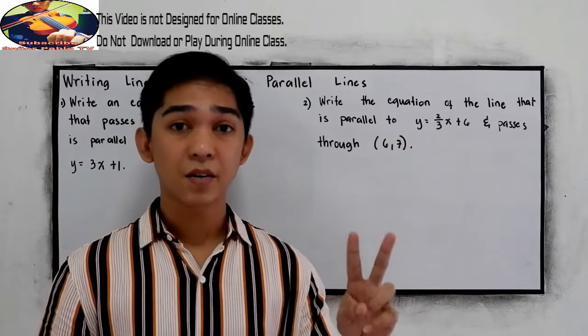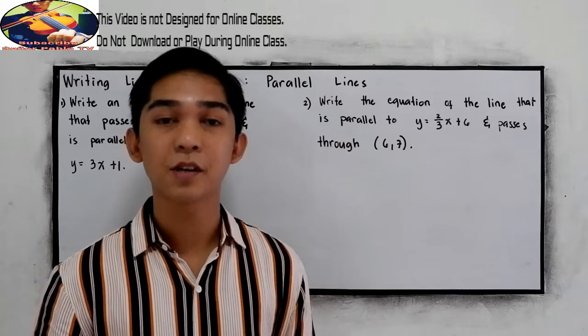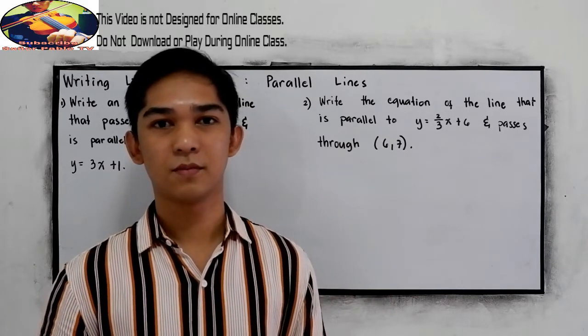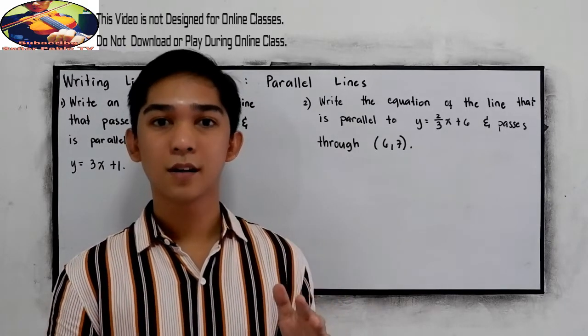If two lines are parallel, therefore they have equal or the same slope. If two lines are parallel, their slopes are the same.